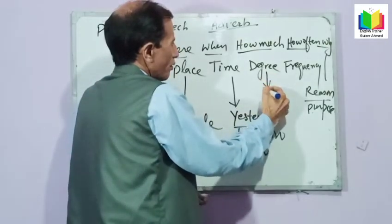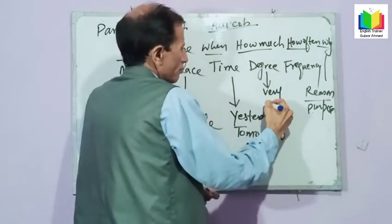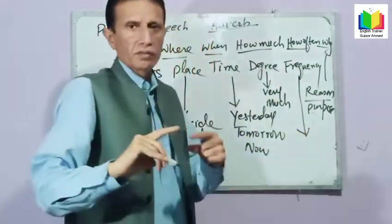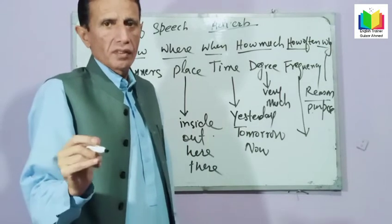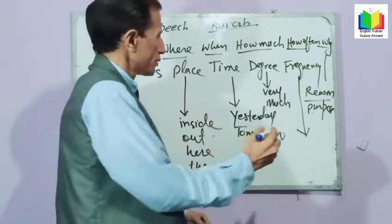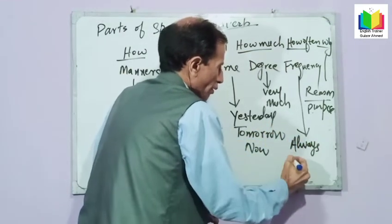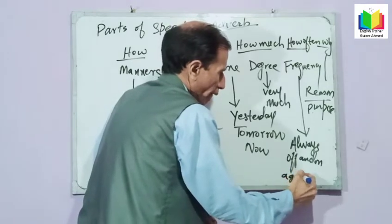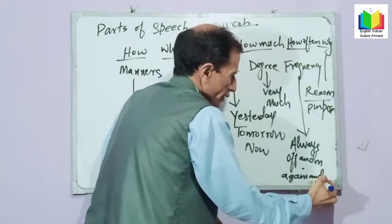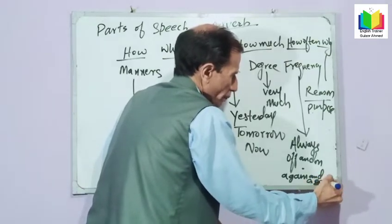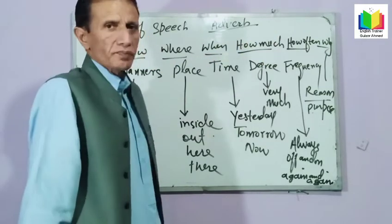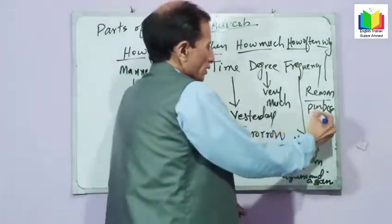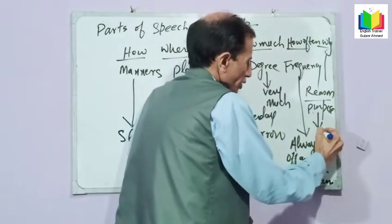For degree: very, much, too much — these are adverbs of degree. For frequency — words that show repetition: always, often, time and again, again and again, off and on — these are adverbs of frequency. And for reason or purpose: because, so, thus — these are adverbs of reason.